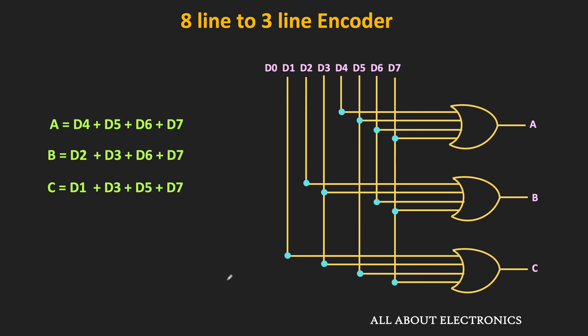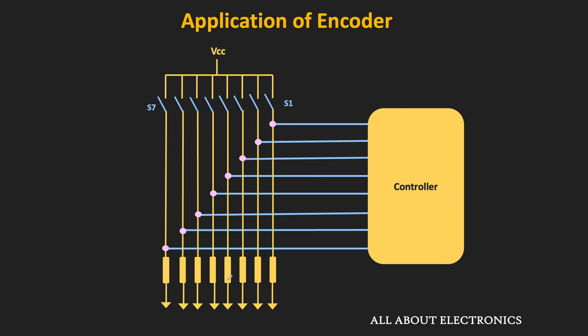This binary encoder encodes input information into a compact code and is particularly useful when we want to connect many input devices to a processor or controller. For example, suppose we want to connect 8 switches to a controller, where each key represents a specific symbol or action — such as for a gaming pad. Whenever a key is pressed, the input to that pin goes to VCC (high), and when not pressed, the input is 0. This allows the controller to detect which key is pressed.